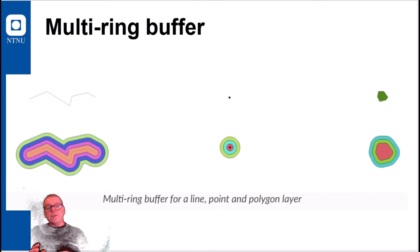We have the multi-ring buffer, which in QGIS is a different tool for this, and then you can have different intervals of equal buffer distances. So to determine in what distance interval you are from the object of interest, being a line, point, or a polygon.